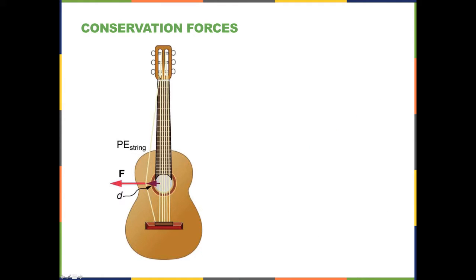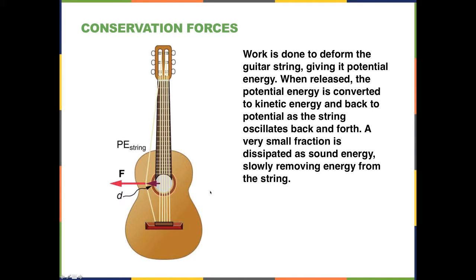Here's another example using a guitar string instead of a spring. The string is stretched out and you exert a force to deform it — the distance measured from the resting position. The work done to deform the string gives it potential energy. When released, that potential energy converts to kinetic energy and the string oscillates. A small fraction is dissipated as sound, and the rest is dissipated as the string slowly loses motion. So the sound you hear comes from the energy of pulling the string.